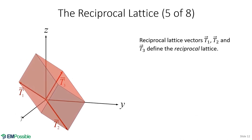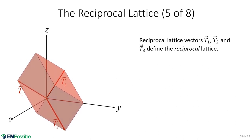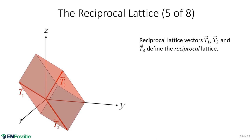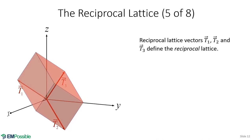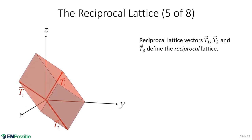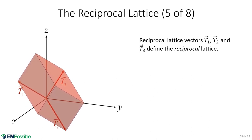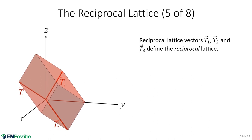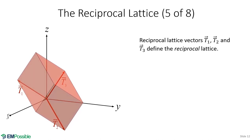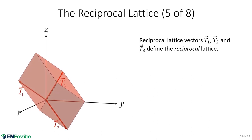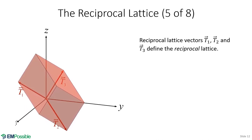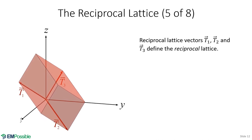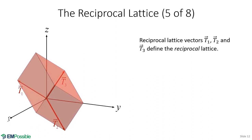Now that we have three reciprocal lattice vectors, we can talk about the lattice they define — the reciprocal lattice. The reciprocal lattice is not something we can touch; it characterizes the symmetry of the direct lattice, specifically the directions that planes repeat themselves in the direct lattice. Try not to think of the reciprocal lattice as having physical structure — it's simply characterizing symmetry, and it's defined by three primitive reciprocal lattice vectors.